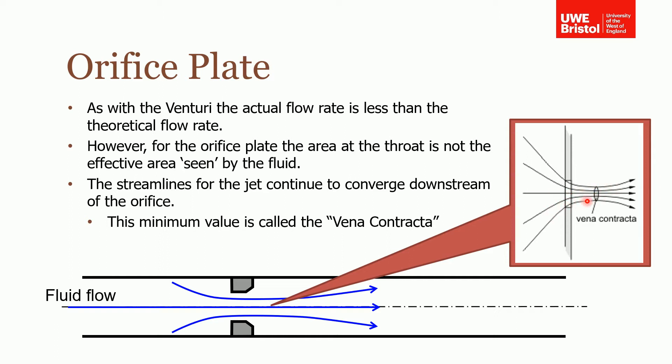The area continues to contract and reaches a minimum area some short distance downstream from the plate. That minimum area is called the vena contracta. You can see that the area of this is less than the actual area in this hole.